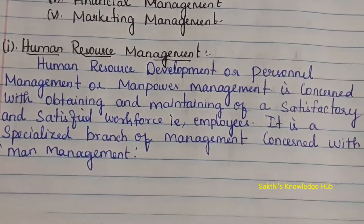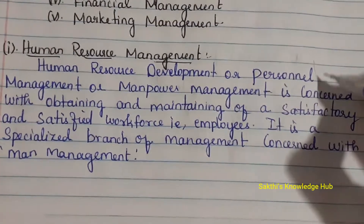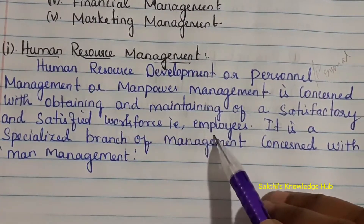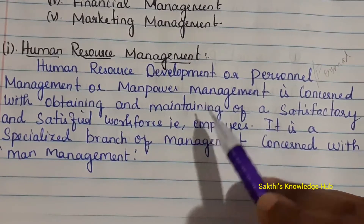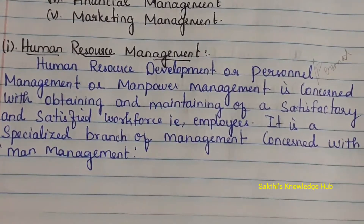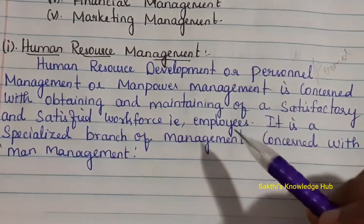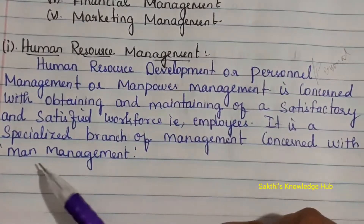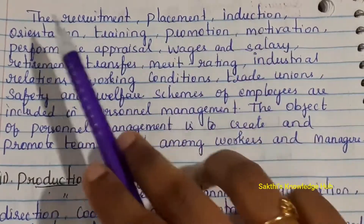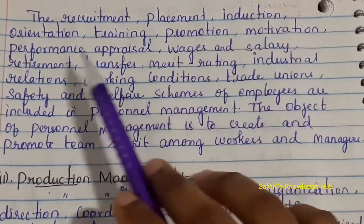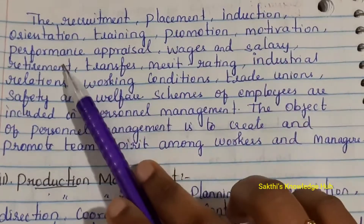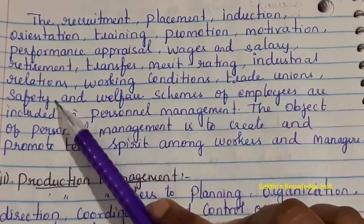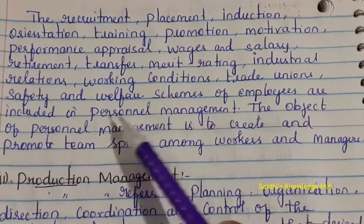Human resource management was previously called personal management, focusing on the human resource from recruitment planning through to the end of a human's requirement in the organization. It covers: recruitment, placement, induction, orientation, training, promotion, motivation, performance appraisal, wages and salary, retirement, transfer, merit rating, industrial relations, working conditions, trade union, and safety and welfare schemes of employees.